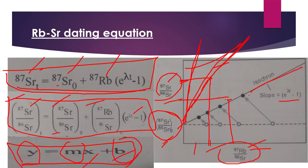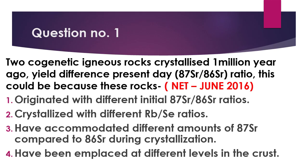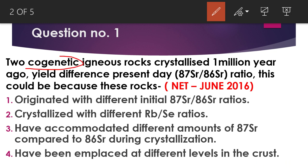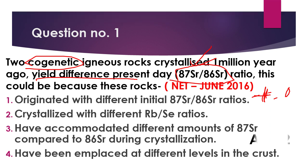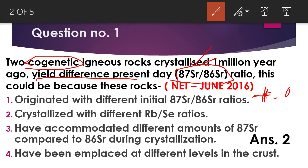Our question was: two co-genetic igneous rocks. If they are co-genetic, that means the 87Sr/86Sr ratio is the same at time t equals zero, at the time of their formation. Now with the passage of time, whatever rubidium is present will transform into strontium-87, and hence this ratio will increase after the decay of rubidium. Now there is difference, and this difference is caused by the disintegration of rubidium.